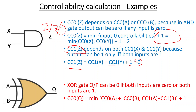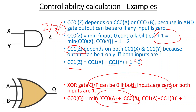For an XOR gate with output Q, the output is zero if both inputs are zero or both inputs are one. So CC0 of Q equals the minimum of (CC0(A) + CC0(B)) or (CC1(A) + CC1(B)), plus one. Either A and B both zero or both one gives output zero. For CC1 of Q, one input zero and the other one is required. These form the basis for XOR controllability calculations.